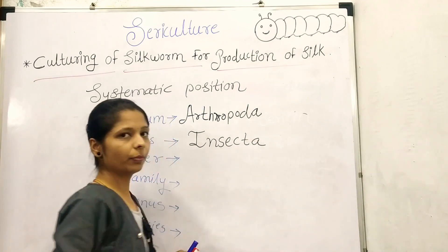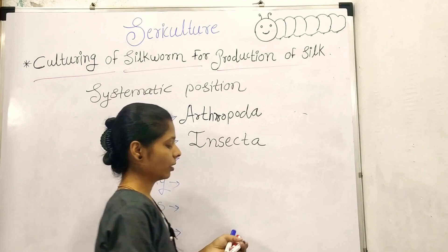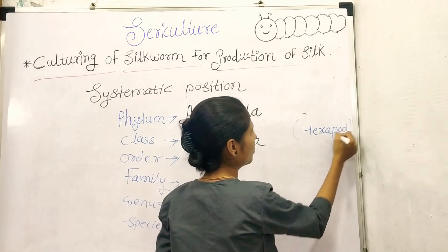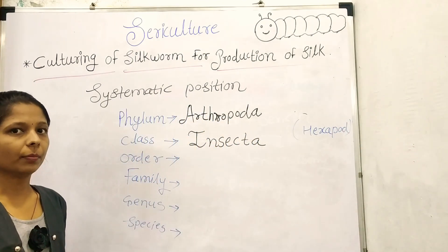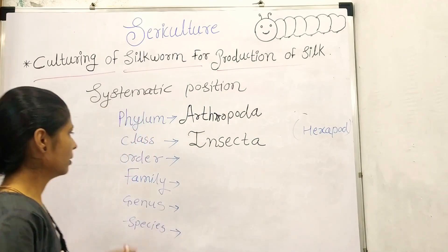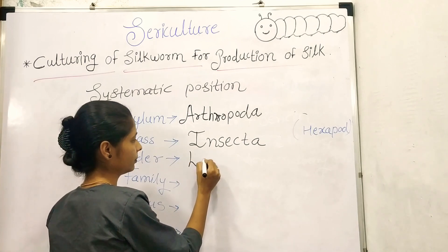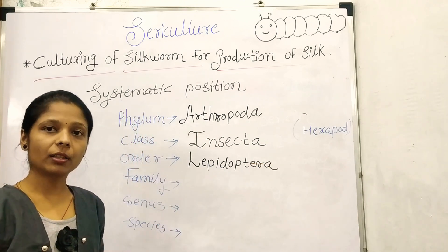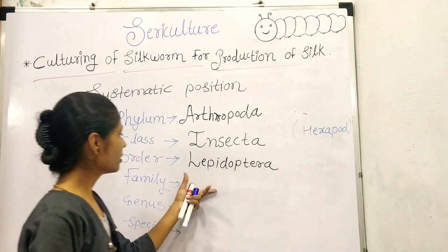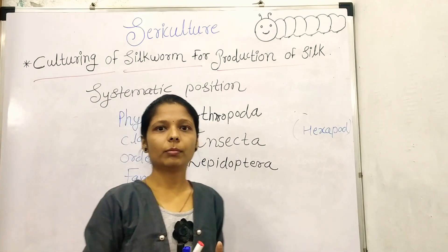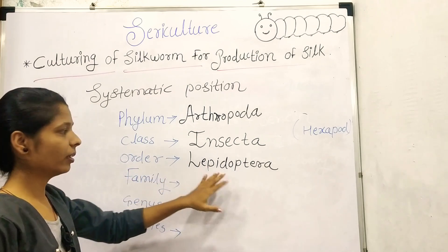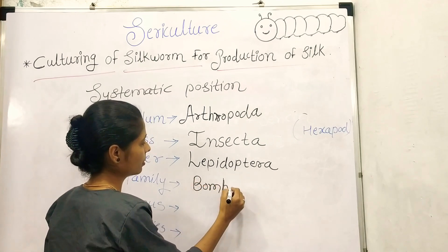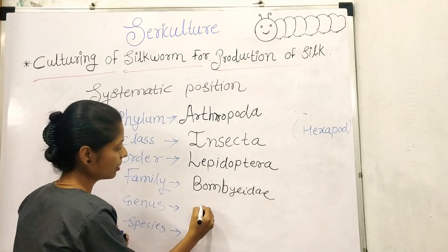The class is Insecta, because all invertebrates that are hexapods — meaning they have six legs, or three pairs of legs — are included in class Insecta. The order is Lepidoptera; butterflies and moths come under the order Lepidoptera. Since the adult silkworm is a moth, it is included in order Lepidoptera. The family is Bombycidae.